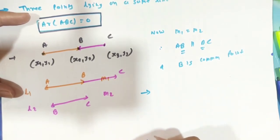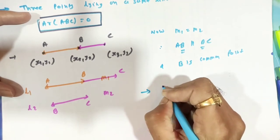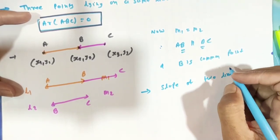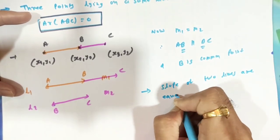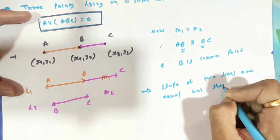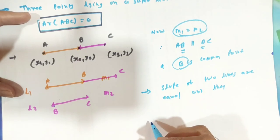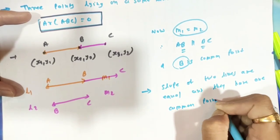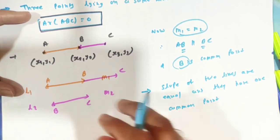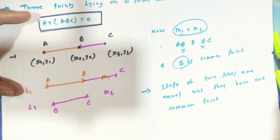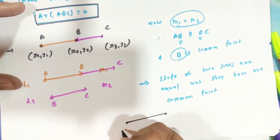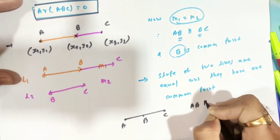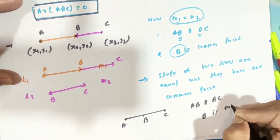What do we want to show? That the three points are collinear. We show that the slope of line AB equals the slope of line BC — M1 = M2 — and that they have one common point B. Since lines AB and BC are parallel and share point B, they coincide, proving A, B, C are collinear points.